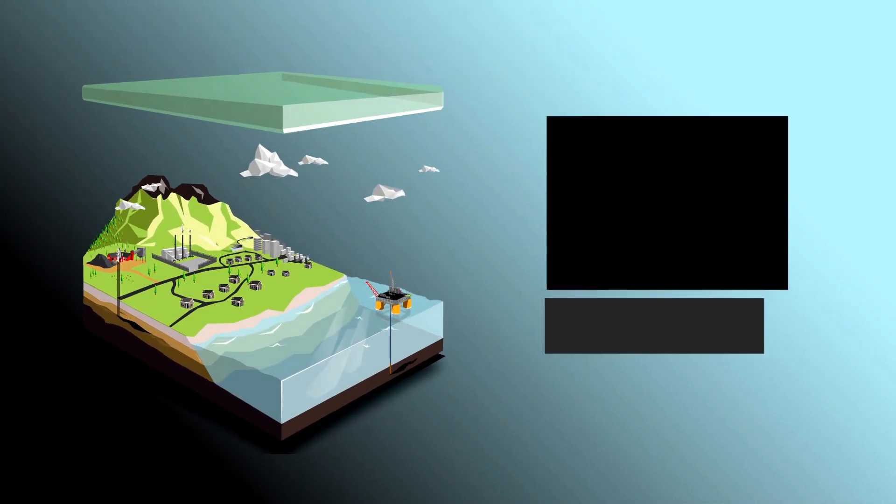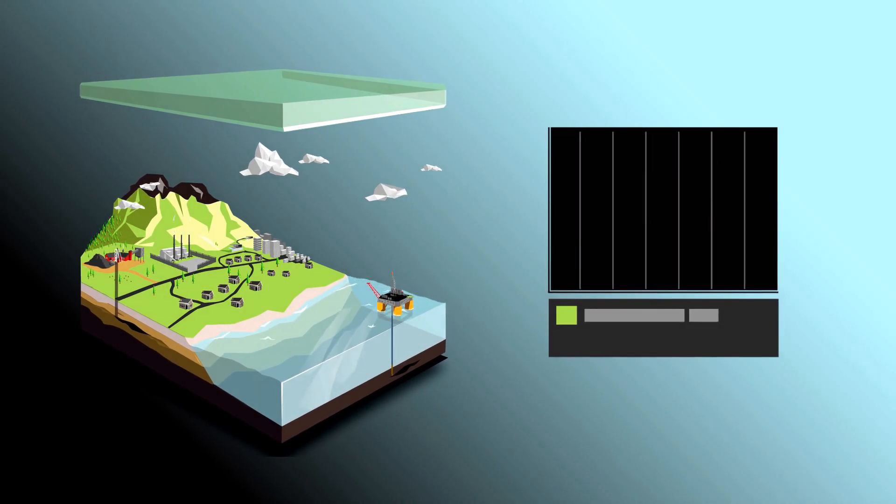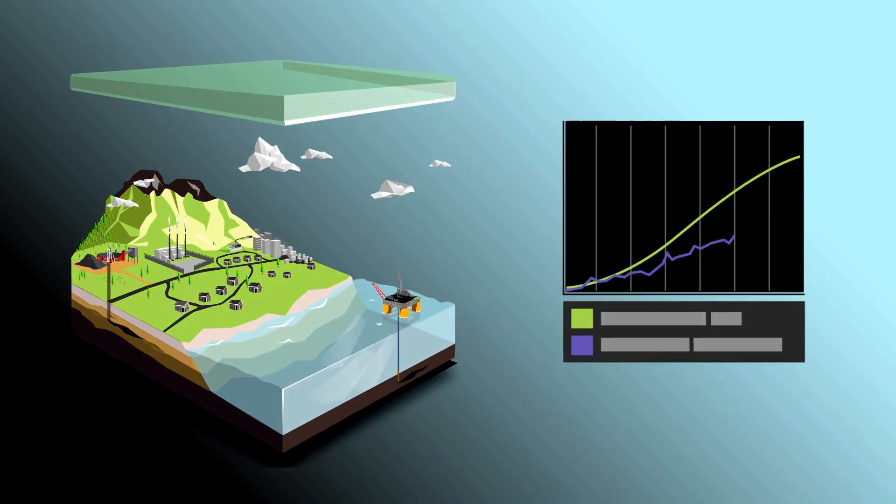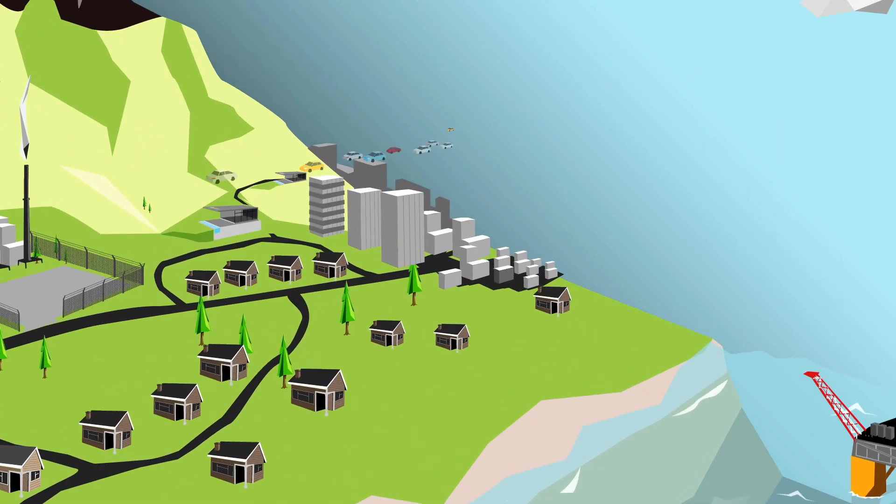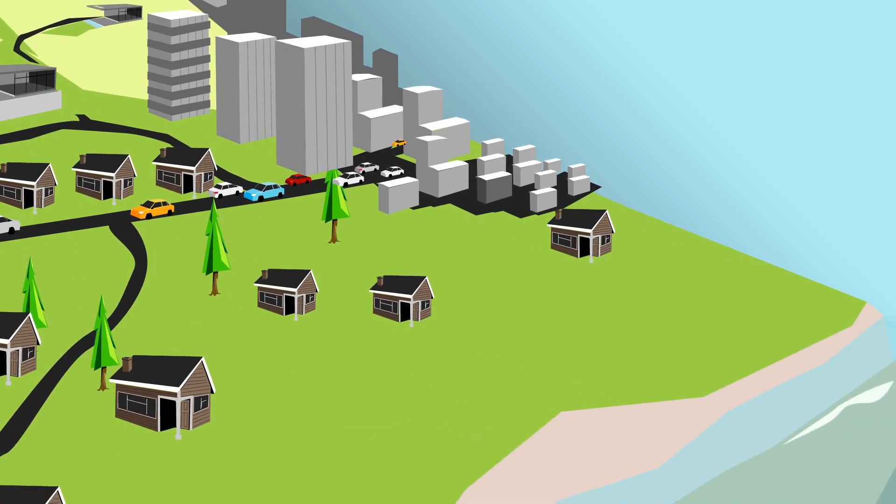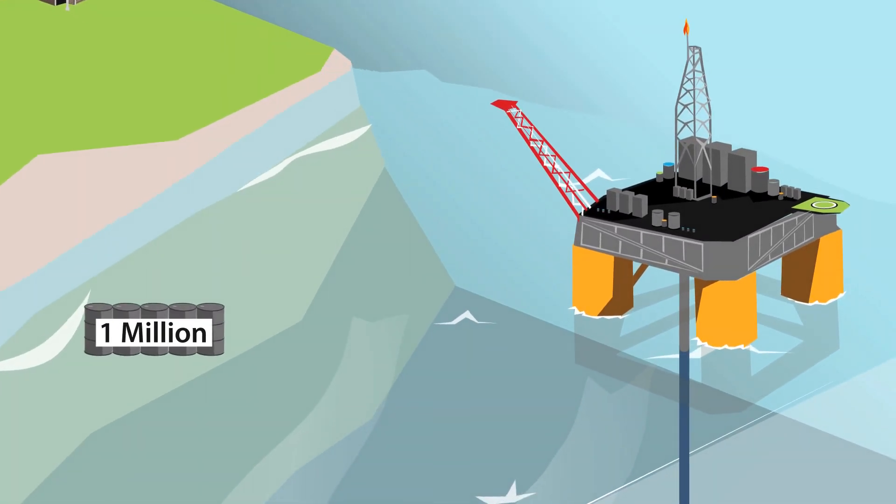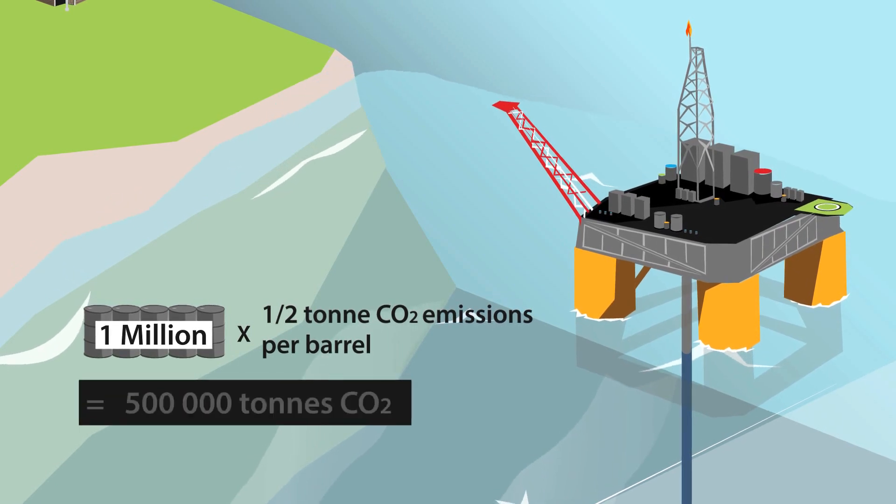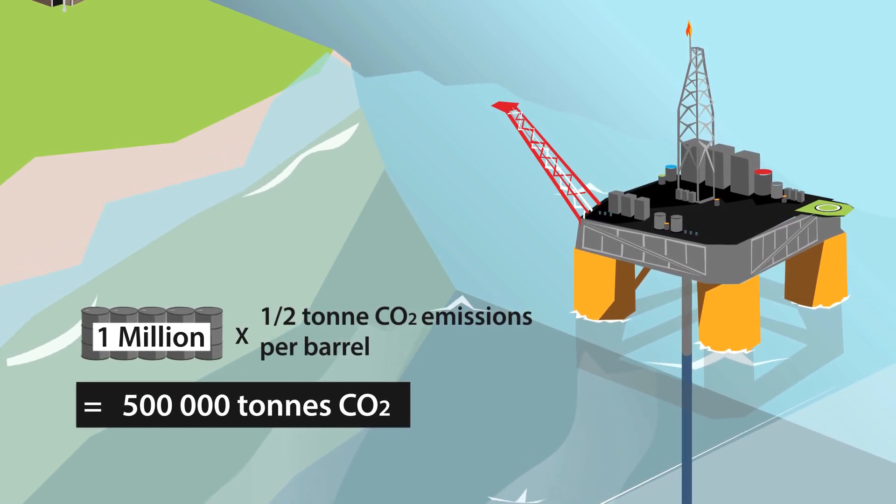Until now, we've relied on indirect estimates of national emissions based on national data and statistics. For example, by counting how many cars are on the road or how many barrels of oil are consumed, we can estimate emissions from these sources. But adding up all these calculations only produces estimates.